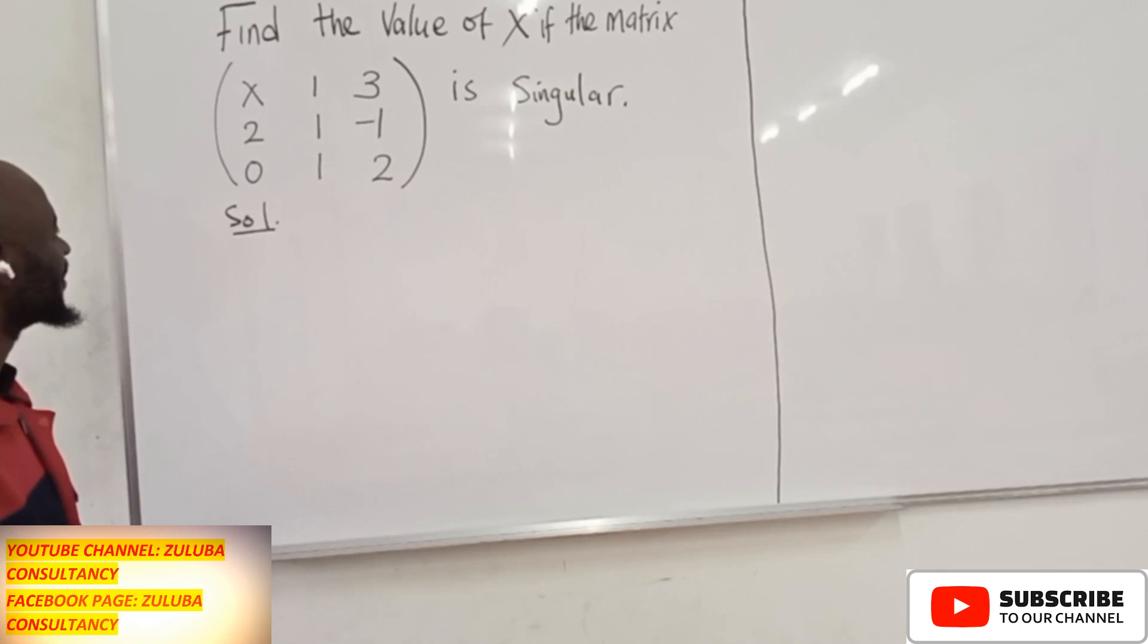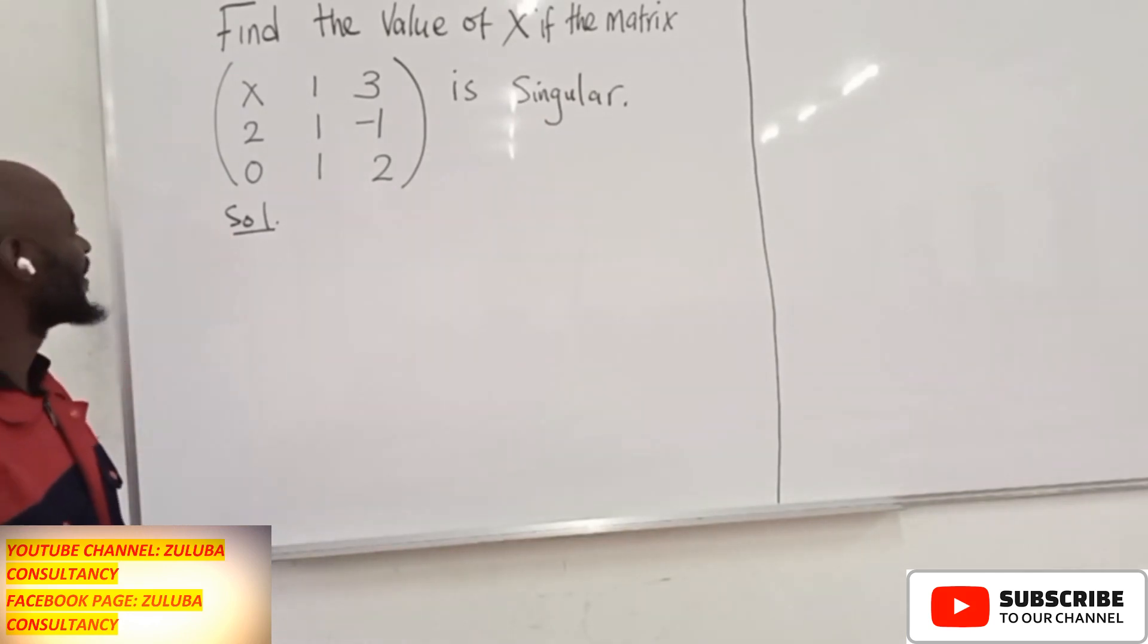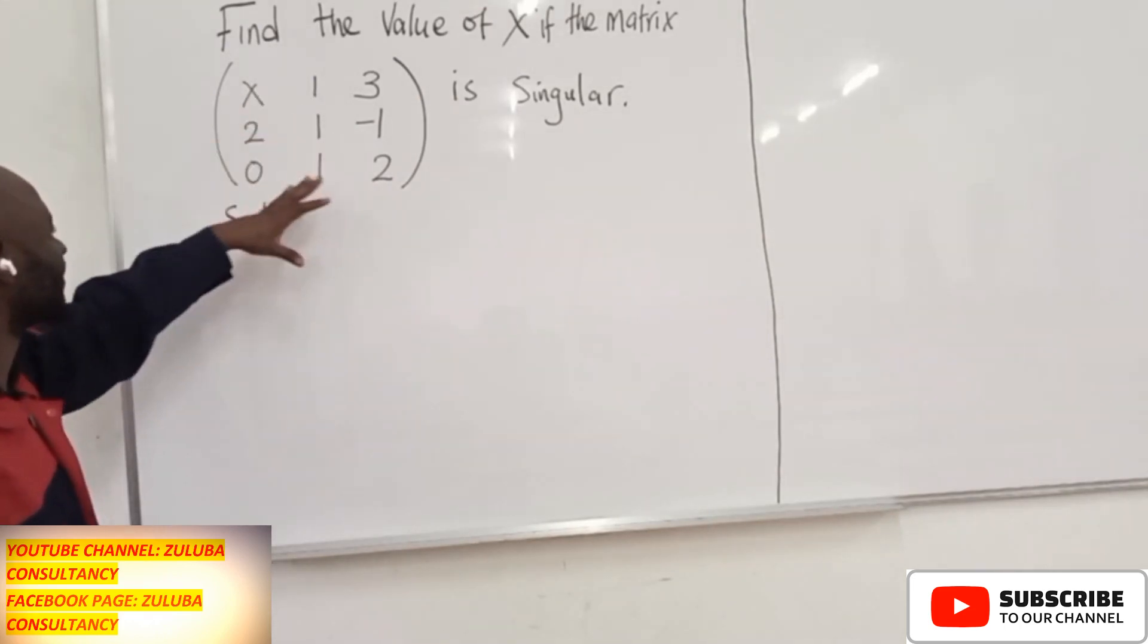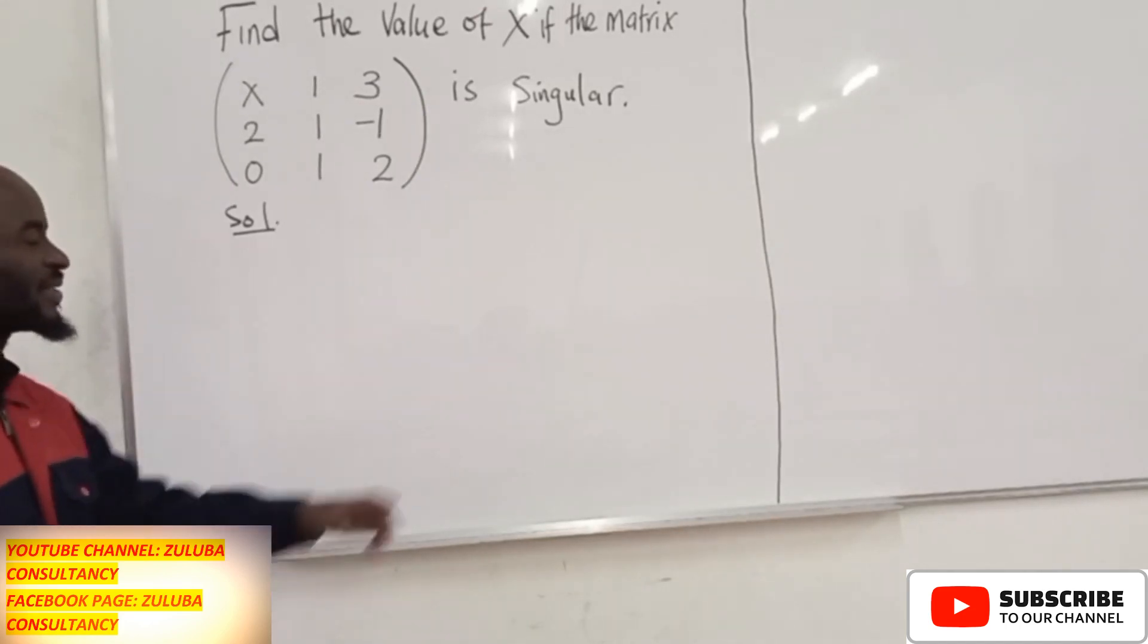Before we go on to solve, we have to understand what it means by singular. A matrix is said to be singular if its determinant is equal to zero. So we are going to find the determinant for this and equate it to zero because the matrix is singular.